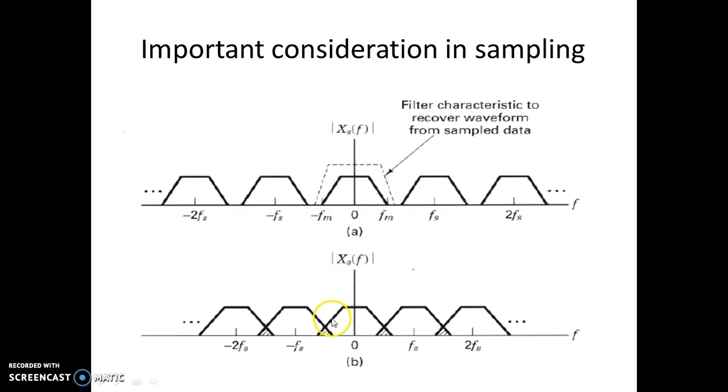What happens if it doesn't follow this property? Then comes this problem of aliasing. The spectrum of x(f) gets overlapped with the spectrum of the nearby replica. This happens everywhere, and as a result, a very important problem called aliasing occurs. Aliasing will lead to loss of information, which you want to avoid.